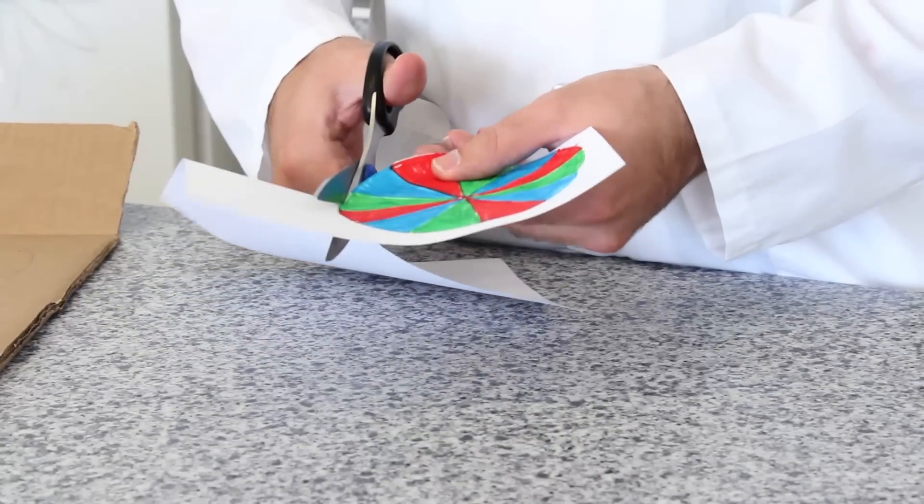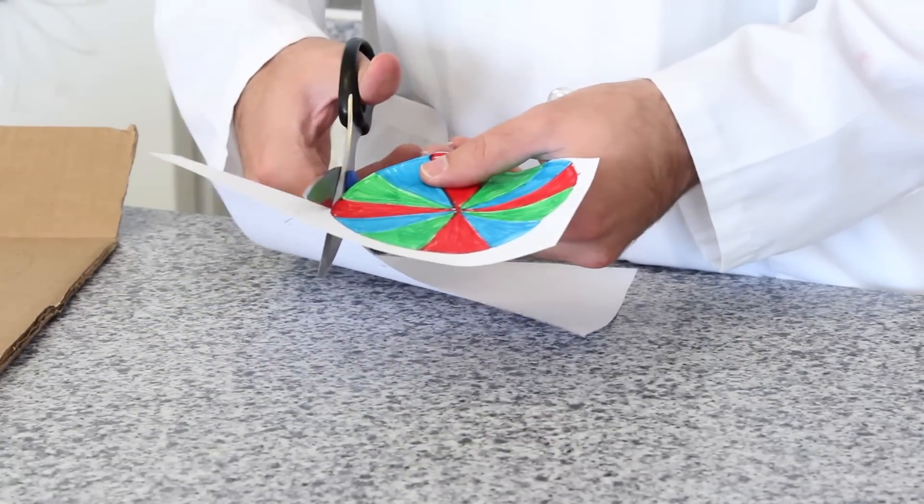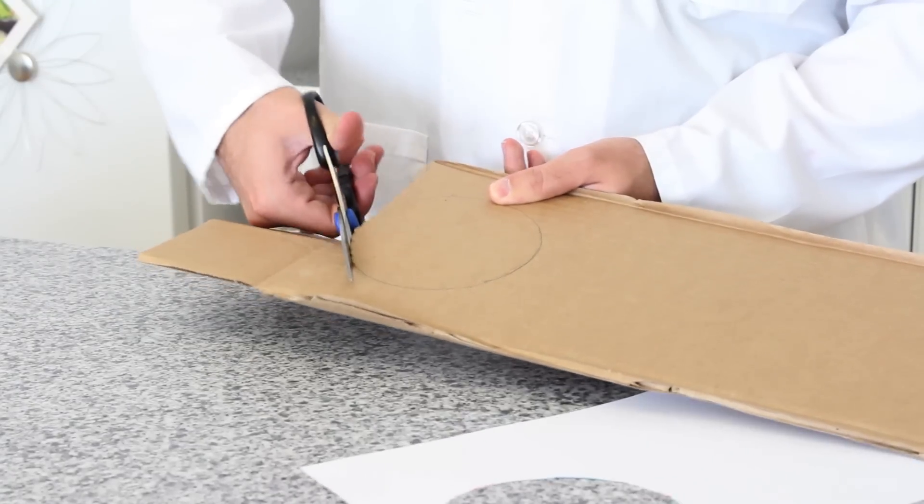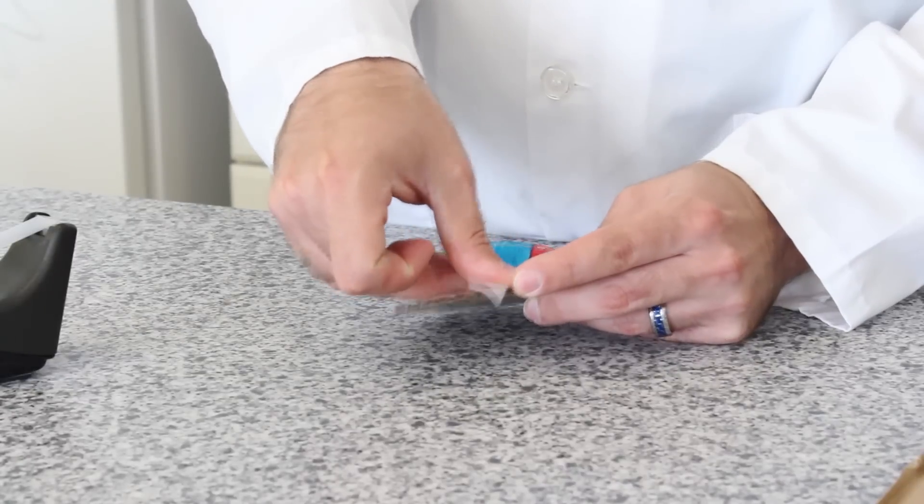The next step is to cut out your paper wheel and your cardboard wheel. Now, tape your paper wheel to your cardboard disc.